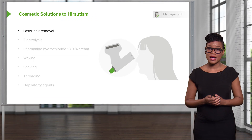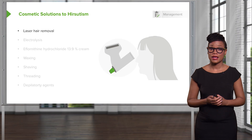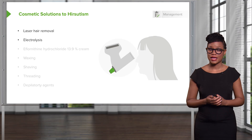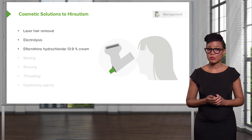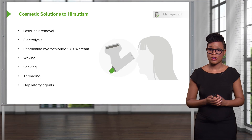There are also some cosmetic solutions for hirsutism. Remember that even if you treat hirsutism with an OCP or other medical management, the effect will not be immediate, so patients still need to participate in cosmetic removal of hair. This can include laser hair removal, electrolysis, topical creams — one cream actually inhibits the enzyme active in the dermal papillae that is essential for hair growth, though it is very expensive and usually not covered by insurance in the US. Women can also undergo waxing, normal shaving, threading, and different agents that cause the hair to fall out.